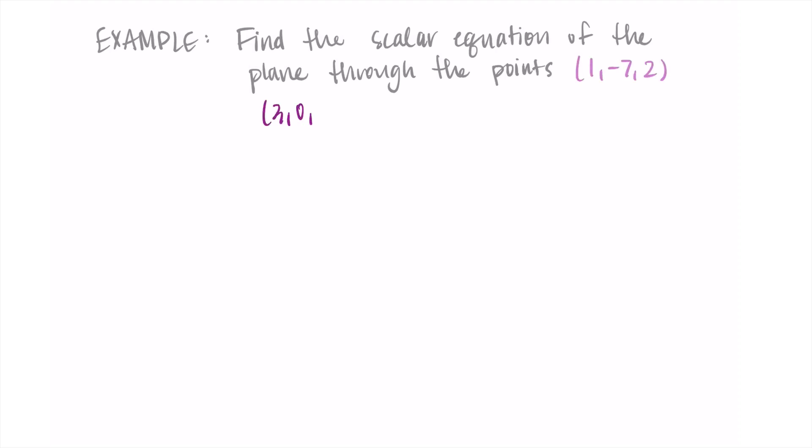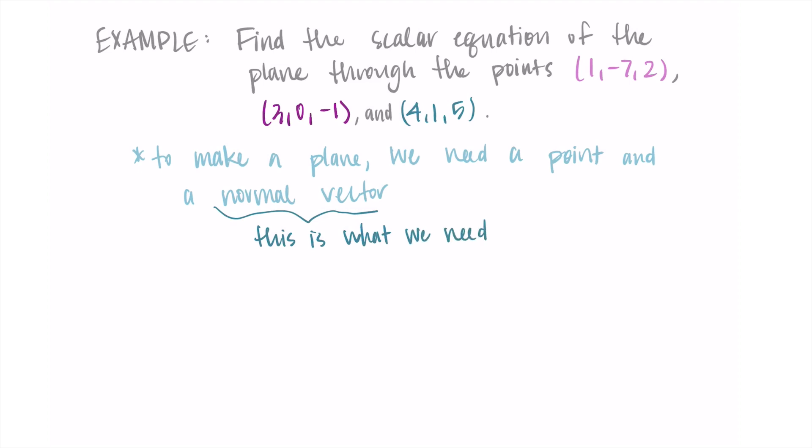Okay, so we were given most of the information that we needed for this problem, but let's do one that's a little more complicated. So let's find the scalar equation of the plane that goes through these three points: (1,-7,2), (3,0,1), and (4,1,5). So we have three points, and we know that in order to make the equation of a plane, we're going to need a point and a normal vector. I was given more than enough points, but I don't have a normal vector. So we're going to need to do some work to find that normal vector. I'll explain how this works, but if you'd like, you can pause now and see what you can come up with for how we might find a normal vector based on these three points that are in the plane.